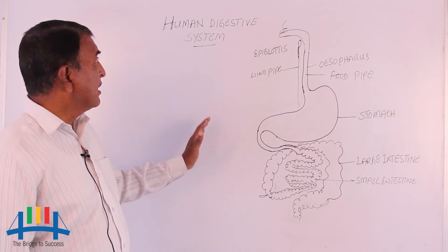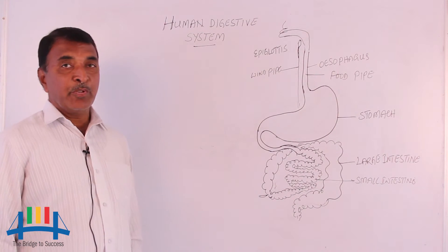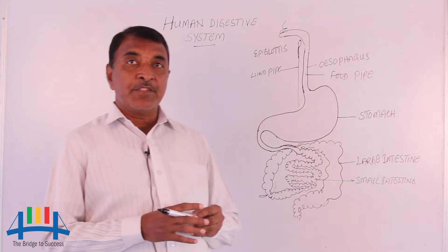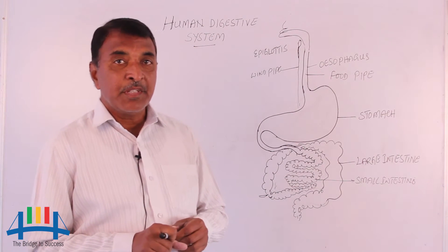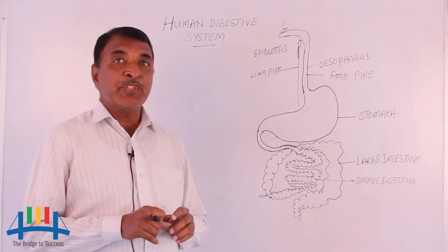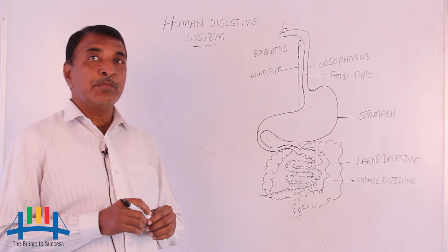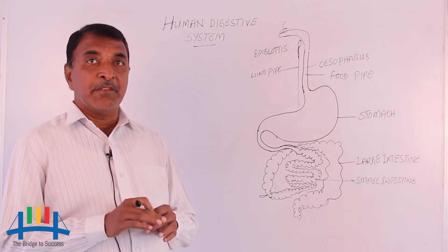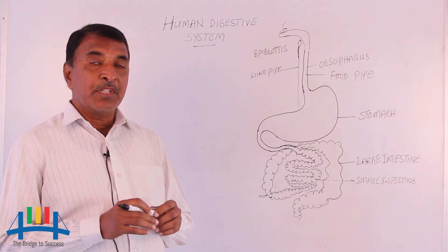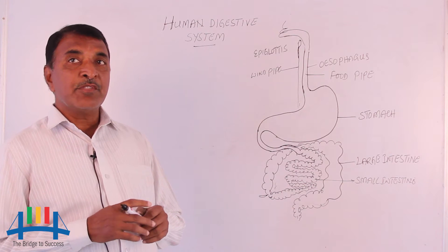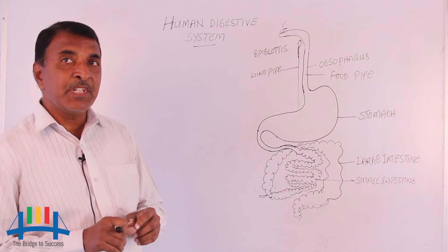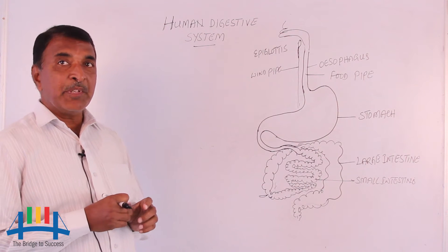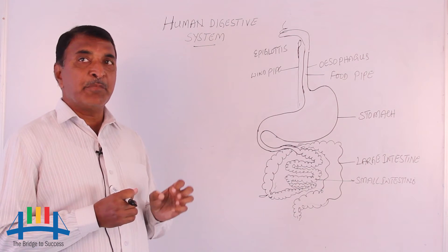Hi, today we are learning about the human digestive system. What is digestion? Digestion means the food which we are eating has to form into different energy levels. The food which we are eating has to churn and become very soft tissue. How is it becoming very soft material?